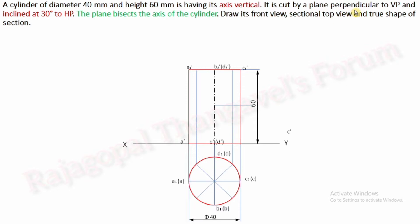Now it is cut by a plane perpendicular to VP and inclined at 30 degrees to HP. The plane bisects the axis of the cylinder — meaning it travels through the midpoint of the axis. The midpoint of 60 mm is 30 mm. Through that 30 mm point, you have to draw a section plane inclined at 30 degrees to HP.